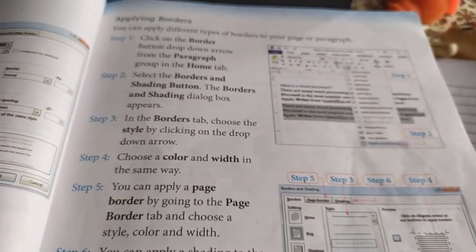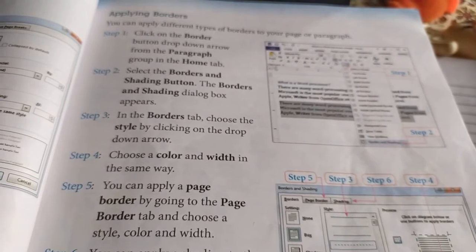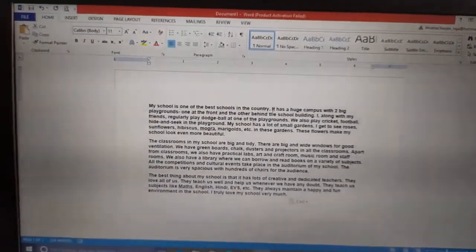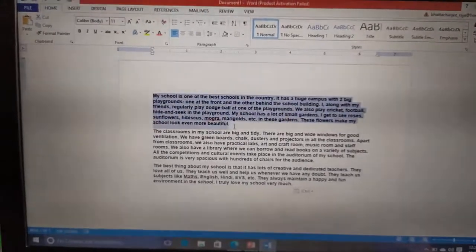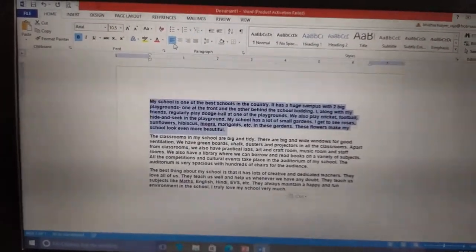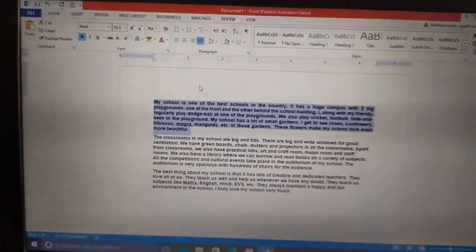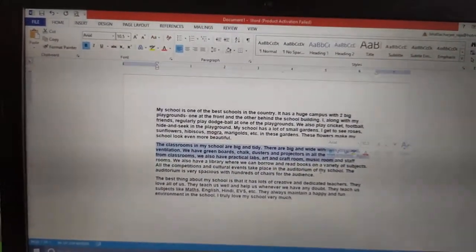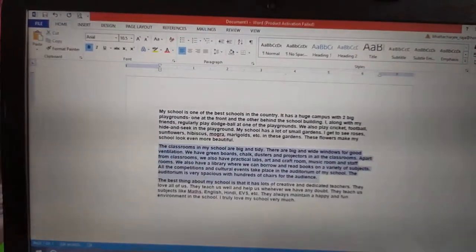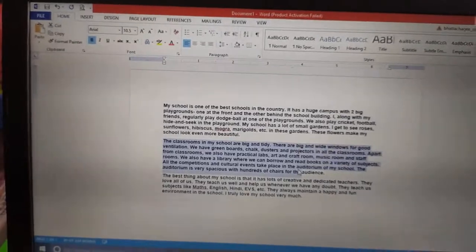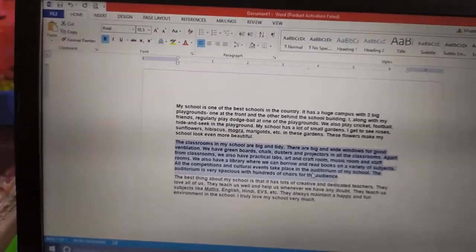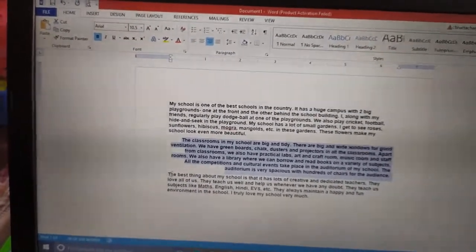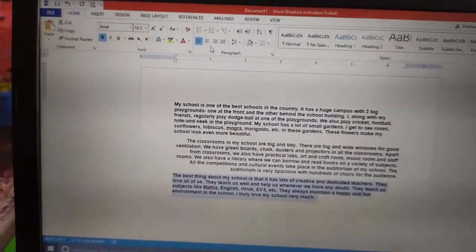Now in the computer, let us see how this formatting of paragraph are done. Suppose, this three paragraphs we have written about my school. Now first, how to align this first paragraph left. See, this is already in the left alignment. Next, let this second paragraph be right align. And this last paragraph be center align.